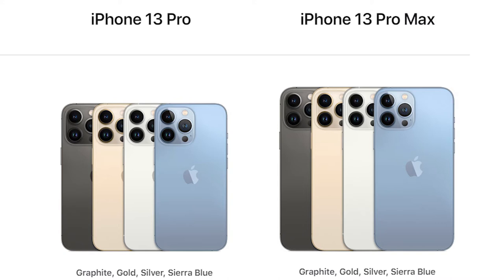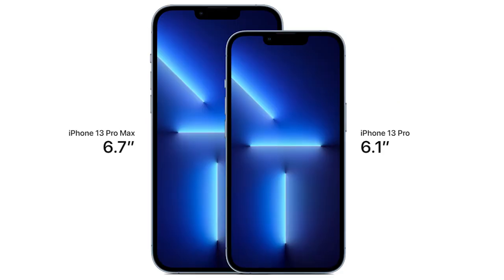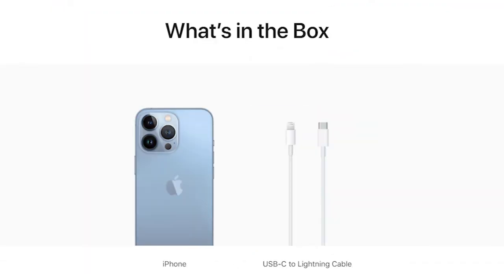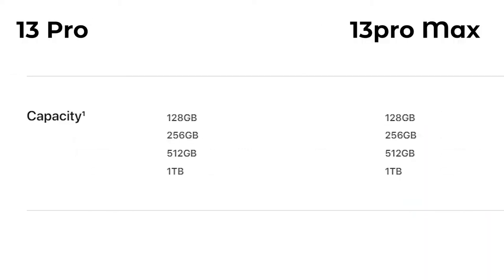You can see four colors are available: Graphite, Gold, Silver, and Sierra Blue. Personally I love every design. Let's have a look at the size — the iPhone 13 Pro Max is a little bigger and the iPhone 13 Pro is a little smaller at 6.1 inches. What's in the box: you will find only the iPhone and a Lightning cable; you need to buy the charger separately, same as before.